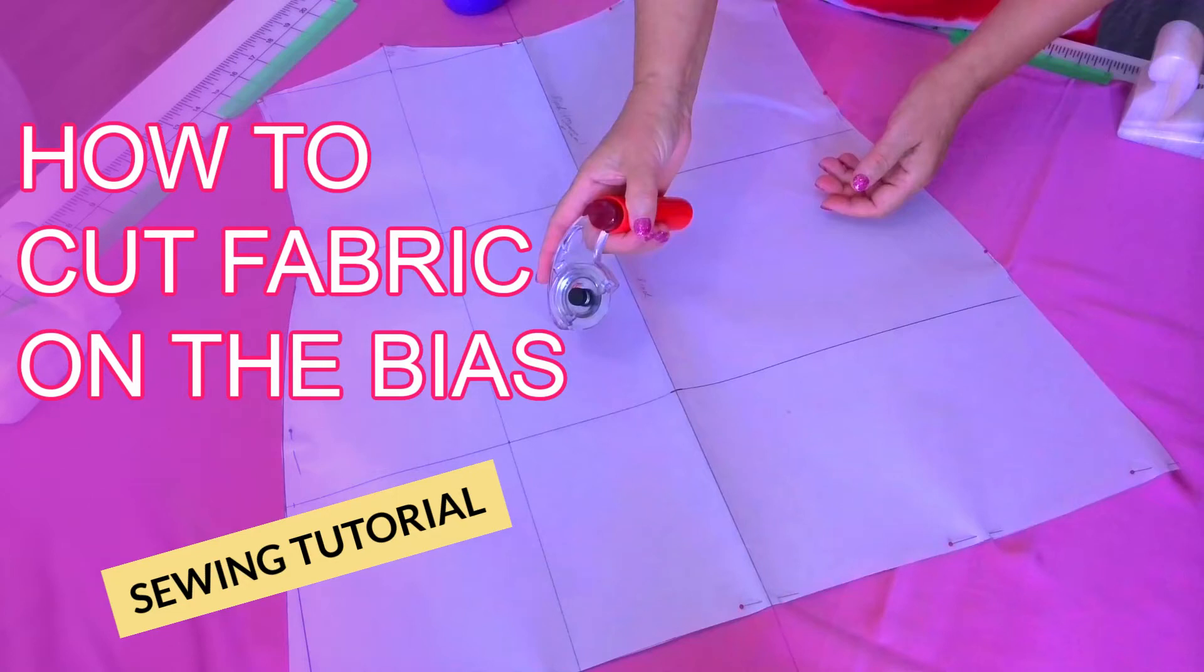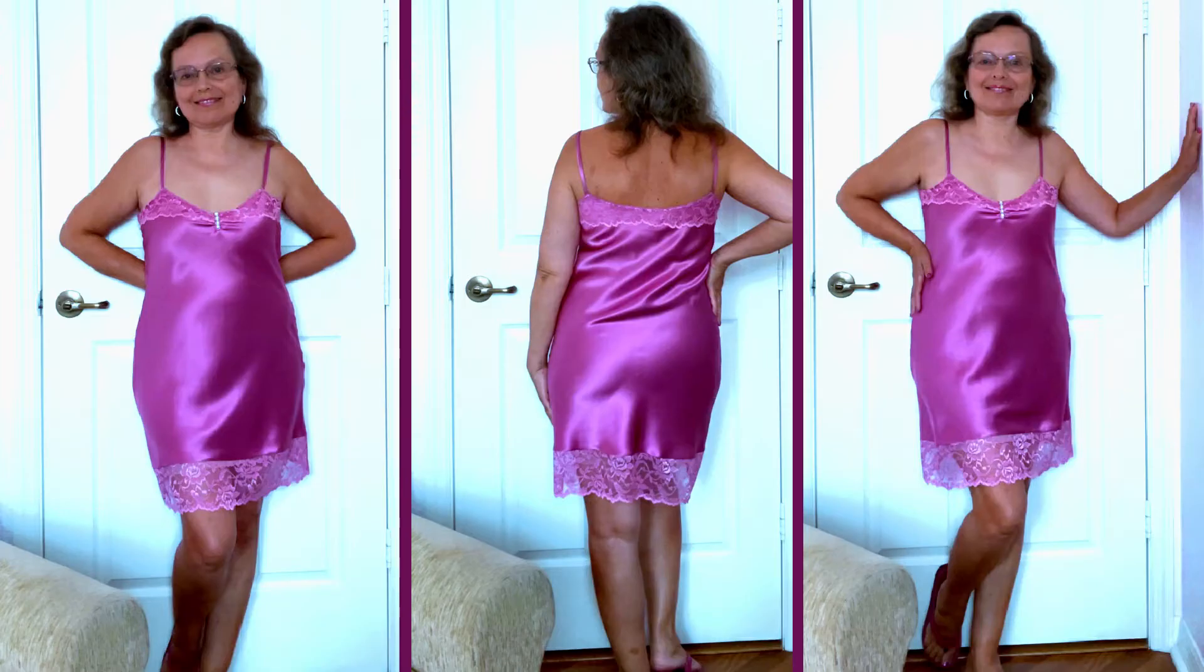In this sewing tutorial I will show you how to cut fabric on the bias. We need to do it when we decide to make bias cut tops and dresses, when we sew spaghetti straps, piping, or when we make binding for a quilt. In this particular case I am making a bias cut slip dress and this is the image of the ready dress.